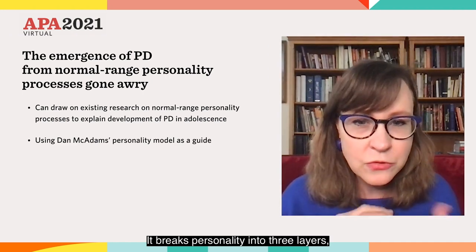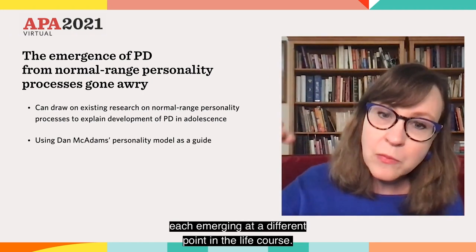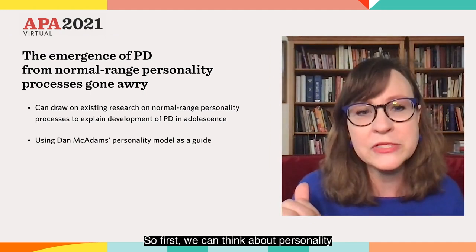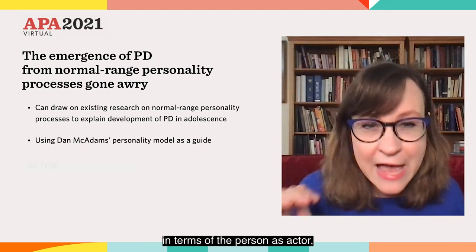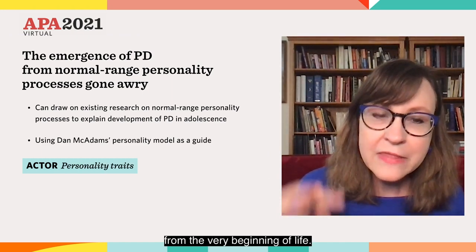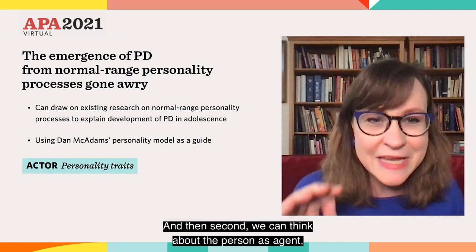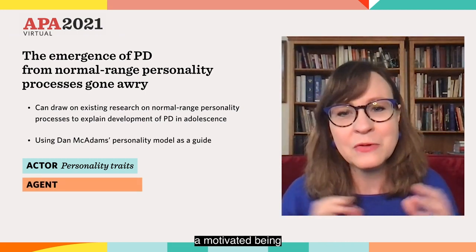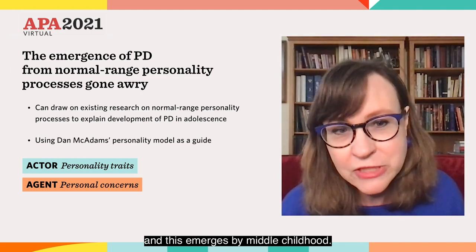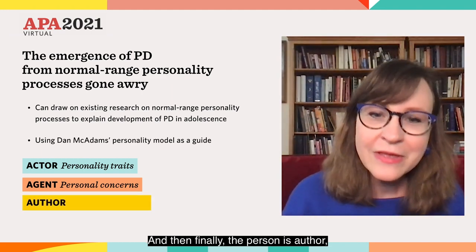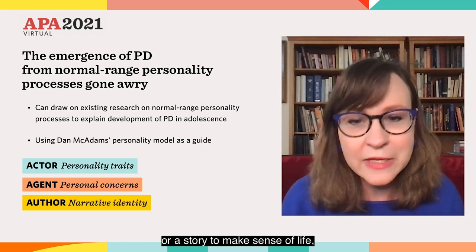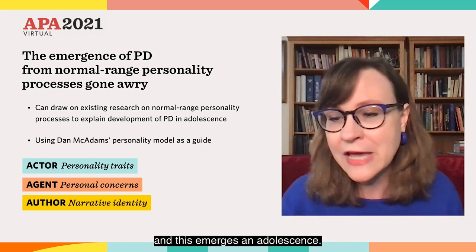He has articulated a really helpful model for personality development that we can use as a guide. It breaks personality into three layers, each emerging at a different point in the life course. First, we can think about personality in terms of the person as actor, evidencing personality traits from the very beginning of life. Then second, the person as agent, a motivated being with personal concerns and goals they pursue, which emerges by middle childhood. And finally, the person as author, developing a narrative identity or a story to make sense of life, and this emerges in adolescence.